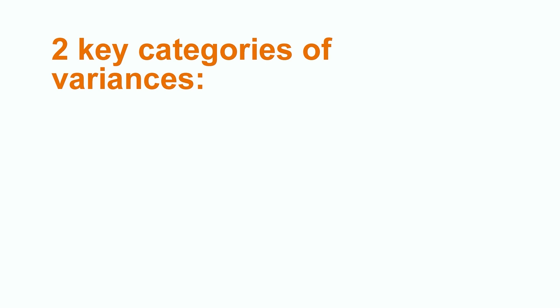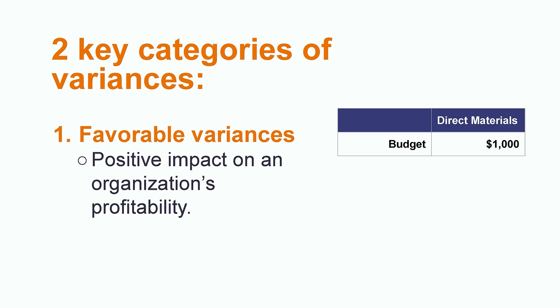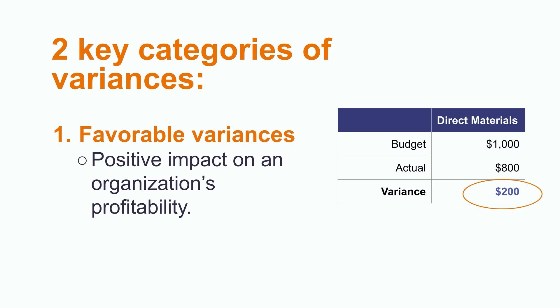There are two key categories of variances that emerge during the process. Favorable variances occur when the result has a positive impact on a company's profitability. This would occur when a company earns more revenue than expected or spends less on operating costs than they planned. For example, let's say a company budgeted to spend $1,000 on direct materials, but they actually only spent $800. The $200 difference between the budgeted value and the actual result would be the variance. Since the company spent $200 less than they planned, this would be considered a favorable variance.